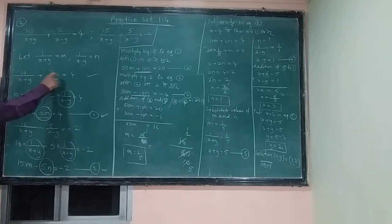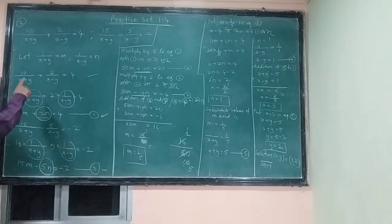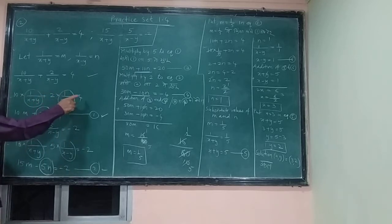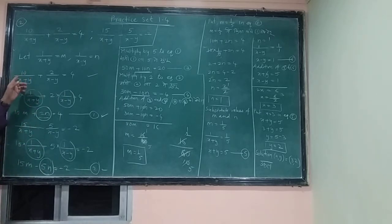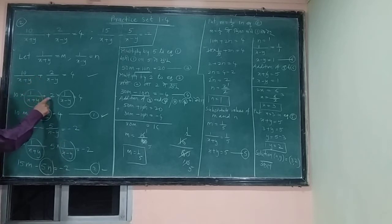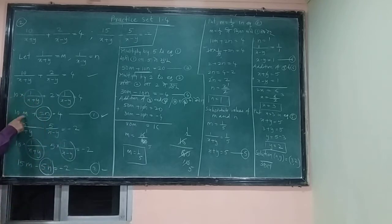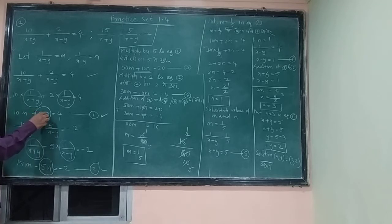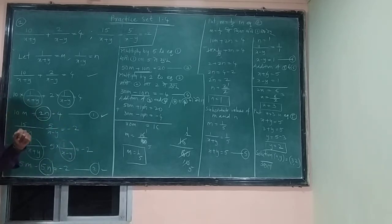Now the first equation: 10 into 1 upon (x + y) plus 2 into 1 upon (x - y) is equal to 4. Since 1 upon (x + y) means m and 1 upon (x - y) means n, we get the equation 10m plus 2n is equal to 4. This is the first equation.